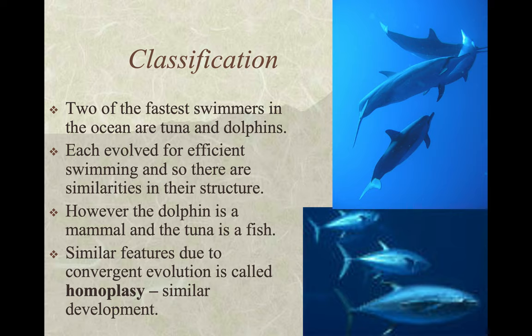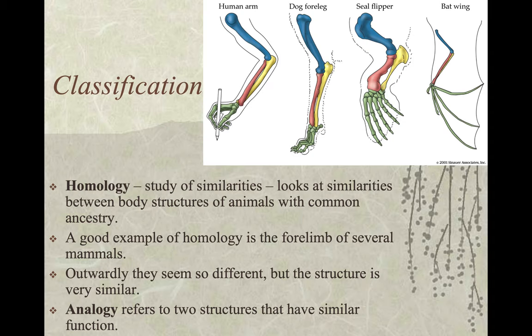Two of the fastest swimmers in the ocean are tuna and dolphins, each evolved for efficient swimming, and so there are similarities in their structure. However, the dolphin is a mammal and the tuna is a fish. Similar features due to convergent evolution is called homoplasty. Their tails don't even point the same direction — the tuna has a vertical tail and the dolphin has a horizontal tail. Homology, the study of similarities, looks at body structures of animals with common ancestry. A good example is the forelimb of several mammals — outwardly they seem so different, but the structure is very similar.